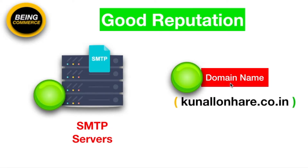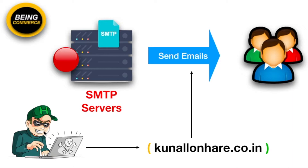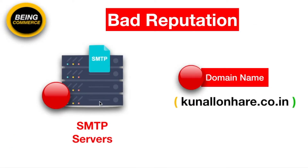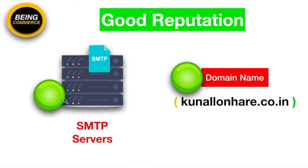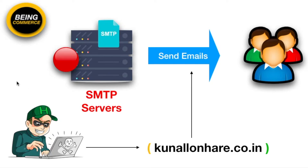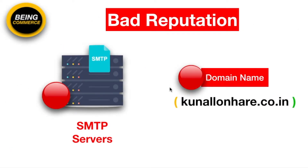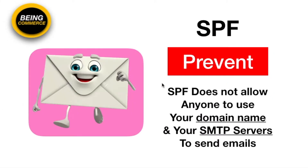Now suppose my SMTP server and domain name both have a good reputation. Let's take a scenario where there is a hacker, spammer, or bad person who usually sends spammy emails. This person has started using my domain kunallunare.co.in because he knows it has a very good reputation. He is sending bad emails using my domain, and as a result, my domain name and SMTP server have started getting a bad reputation.